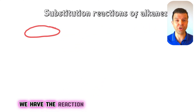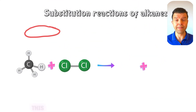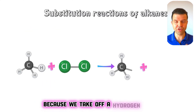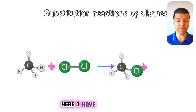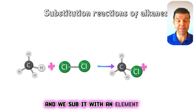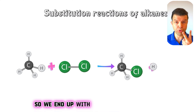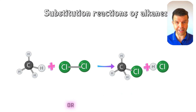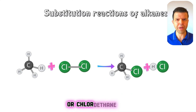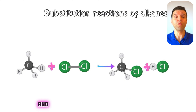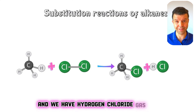Here we have the reaction of methane with chlorine. This is a typical substitution reaction — we take off a hydrogen from the hydrocarbon and substitute it with an element such as chlorine. We end up with two products: what we call a halogenoalkane, or chloromethane in this case, and hydrogen chloride gas.